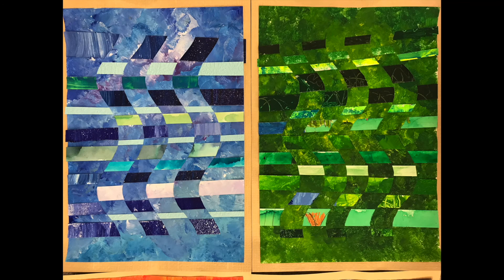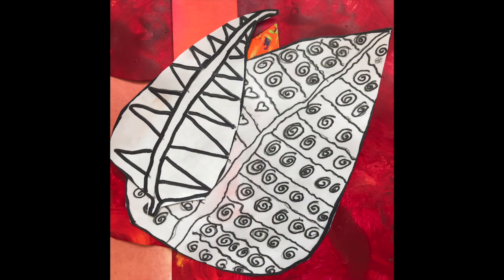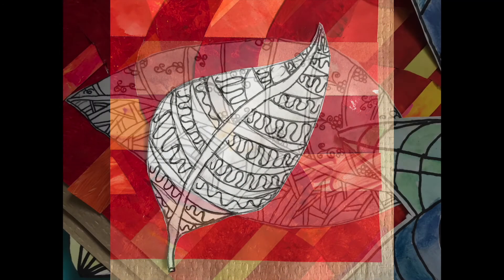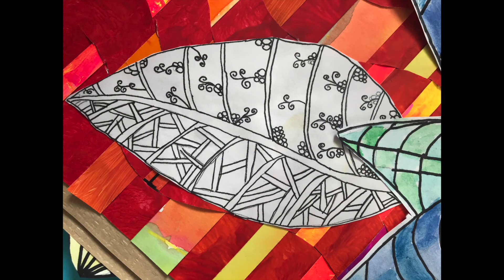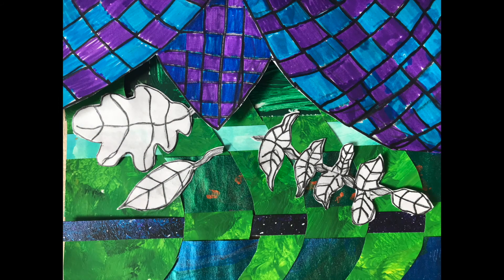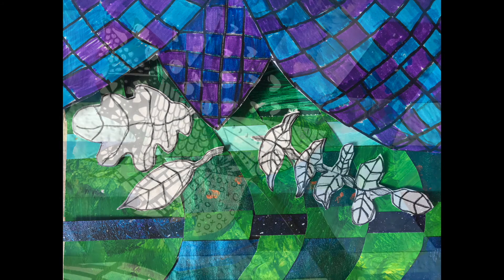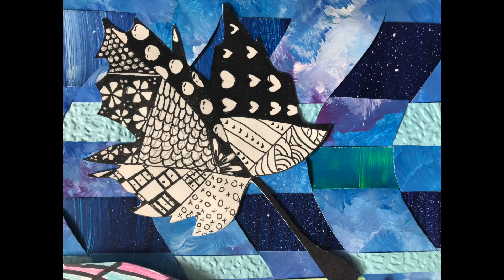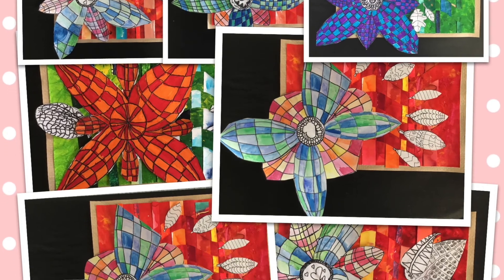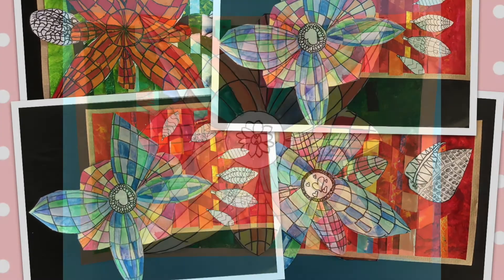One final option you might like to consider is adding in a few leaves. We created these leaves to match the centers of our flowers using lots of interesting line designs and patterns. Again, keeping the leaves white, but creating all those patterns with a black marker. I really hope you enjoy creating this artwork that explores the element of art called texture. Both real texture and implied texture, all explored through the context of weaving.